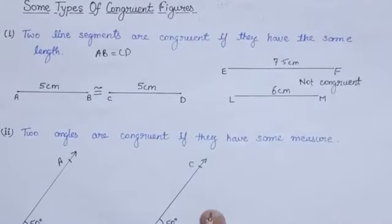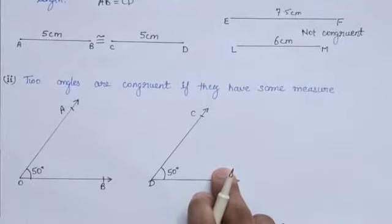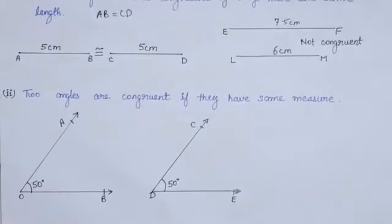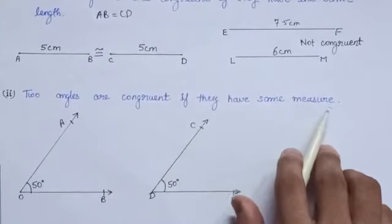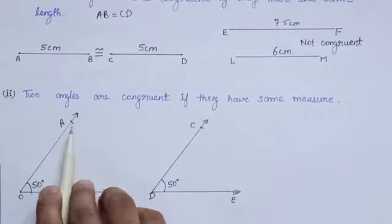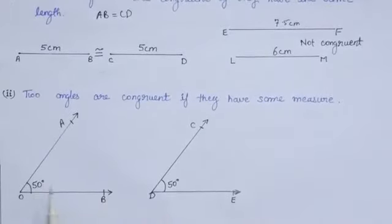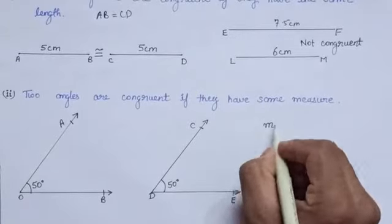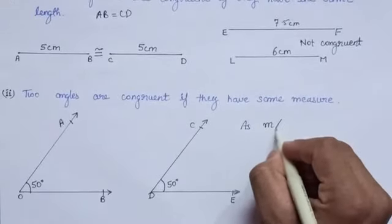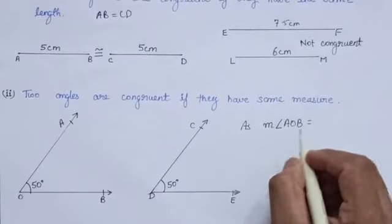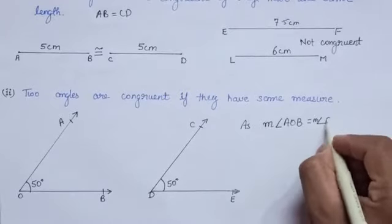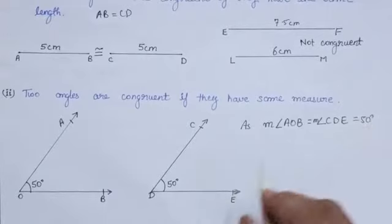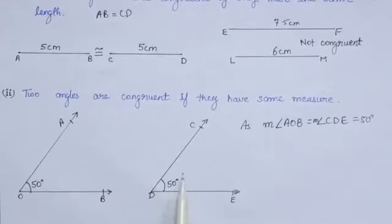Two line segments are said to be congruent only if they have the same length. Now let us see the condition for congruence of two angles. Two angles are congruent if they have the same measure. Here you can see that angle AOP measures 50 degrees and angle COD also measures 50 degrees. So we can write: measure of angle AOP equals measure of angle CDE, which equals 50 degrees. Hence, we can say these two angles are congruent.